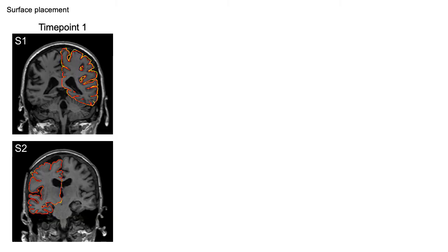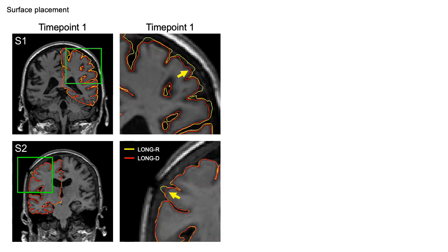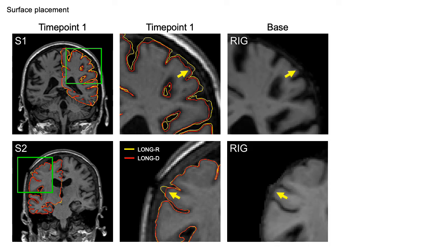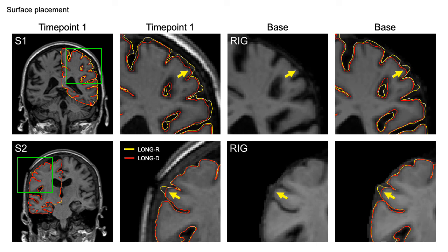For a few of the ADNI subjects, using the deformable instead of the rigid template resulted in improved longitudinal surface placement. Shown here are the pial surfaces of a longitudinal time point for two separate subjects. The yellow surfaces were obtained using the rigid template and mistakenly include dura. This is not the case for the red surfaces, which were obtained with the deformable template. For both surfaces, the longitudinal processing was identical — the only difference was the surface initialization. Comparing the base templates for each subject, using deformable registration slightly increased image sharpness, so the base surfaces no longer include dura, which means better initialization of the longitudinal time points.